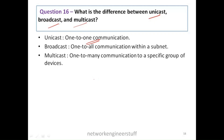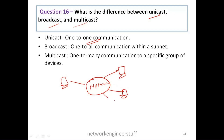Let's say we have a network with hosts A, B, C, and D. When it is one-to-one communication — that is, when A communicates only with B — this is unicast. Broadcast is one-to-all communication: when A sends something to B, C, and D also, sending to all — that is broadcast.